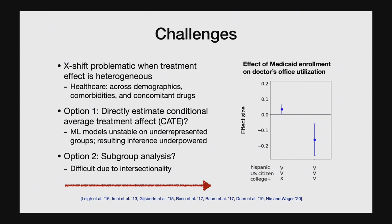As one illustration, on the right I'm looking at the effect of enrolling in Medicaid on doctor's office utilization, looking at the treatment effect on two demographic groups that are identical but differ only in level of education. These small differences in demographic groupings can result in fairly large differences in the treatment effect. It goes to show how difficult it is to define these subgroups a priori without doing the analysis.